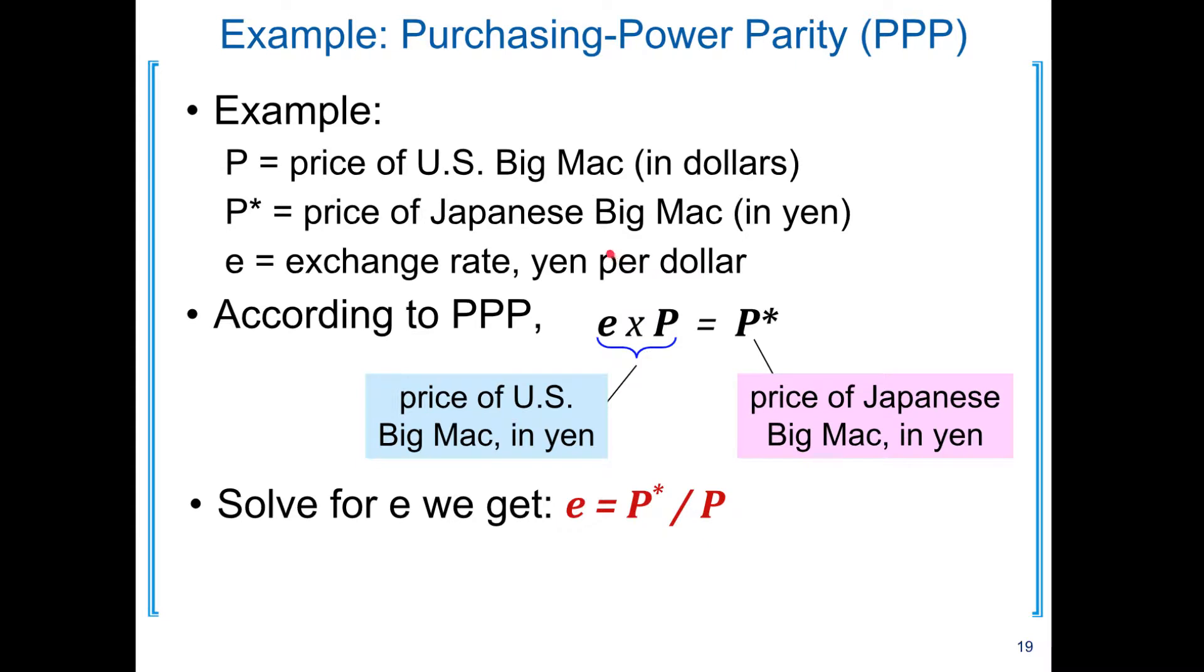So for example, if we look at the price of Big Mac in US and Japan, let P denotes how much Big Mac costs in US, which is probably around $5. And let P star denotes how much Big Mac costs in Japan. And let E denotes the exchange rate between Yen and Dollar.